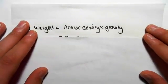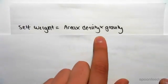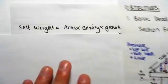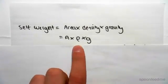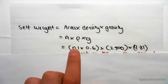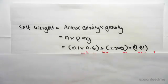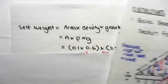The self-weight, as we discussed in the previous video, is the area times the density times the gravity. So in this case, it's area times ρ times g. The area is going to be 0.1 by 0.6. I'm working in meters and kilograms throughout this video.